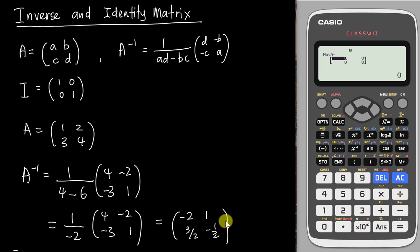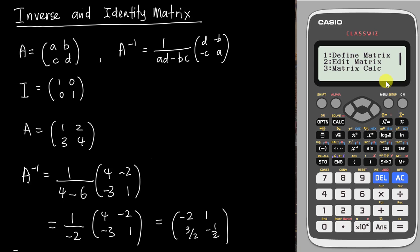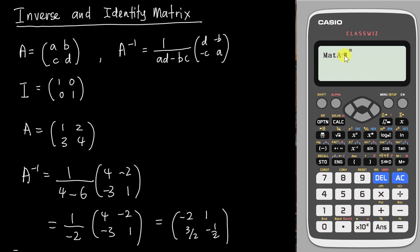You can write the answer in decimal or convert it back to a fraction. To check in the calculator: I've entered 1 2 3 4 as matrix A. Go to Option, do matrix calculation, choose matrix A (number 3), then press the inverse button. The calculator shows A inverse as: negative 2, 1, 1.5 (which is 3/2), and negative 0.5 (which is negative 1/2).